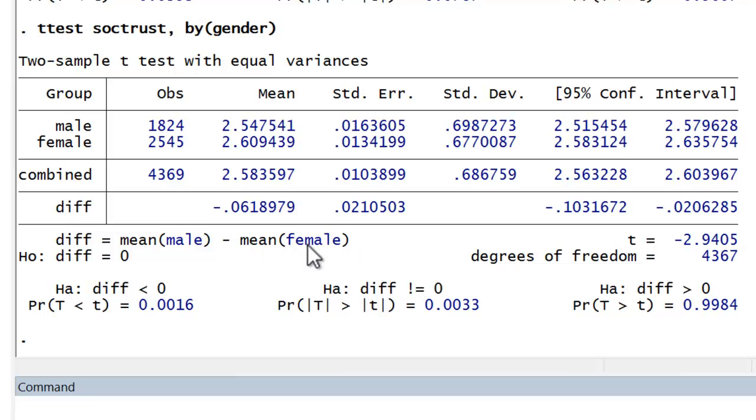If we had hypothesized female being larger, that would result in a negative value below zero. So that's where this would be our alternative hypothesis, where the difference is less than zero. And this would be our p-value.